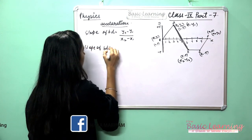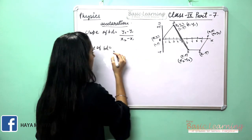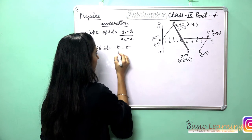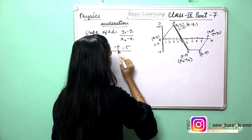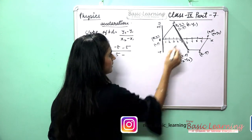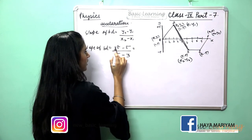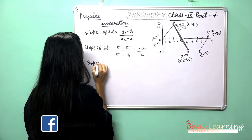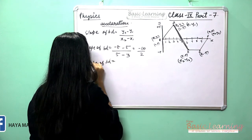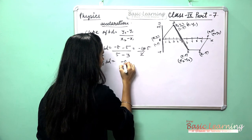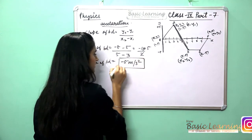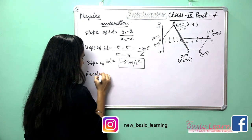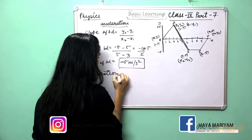For slope of BD: y2 = −5, y1 = 5, x2 = 5, x1 = 3. So slope = (−5 − 5) / (5 − 3) = −10 / 2 = −5 meters per second squared. The slope of BD is −5 m/s², so the acceleration is negative.